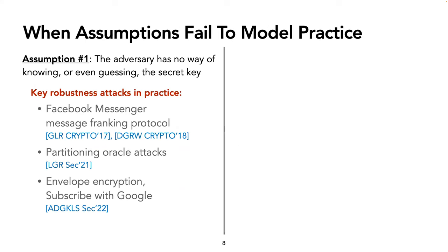As a quick summary of these vulnerabilities, Grubbs et al. and Dotis et al. showed attacks on Facebook Messenger's message ranking protocol. In prior work, we described a new type of attack that we call partitioning oracle attacks, and showed how to use this attack to exploit key robustness vulnerabilities in Shadowsocks proxy servers and early implementations of the OPAQUE password-authenticated key exchange protocol. And finally, Albertini et al. described vulnerabilities with envelope encryption subscribed with Google when they used AEAD schemes that are not key robust.